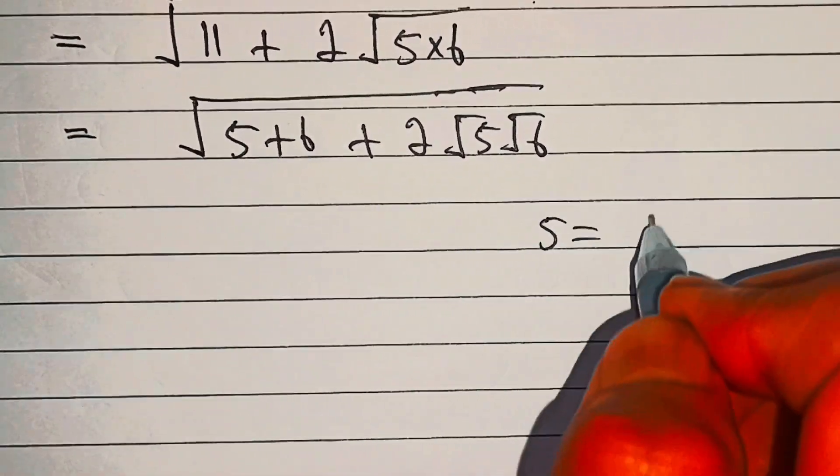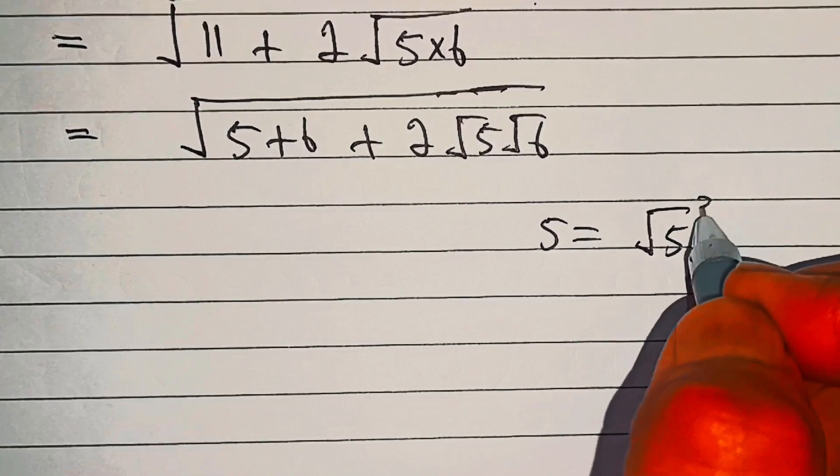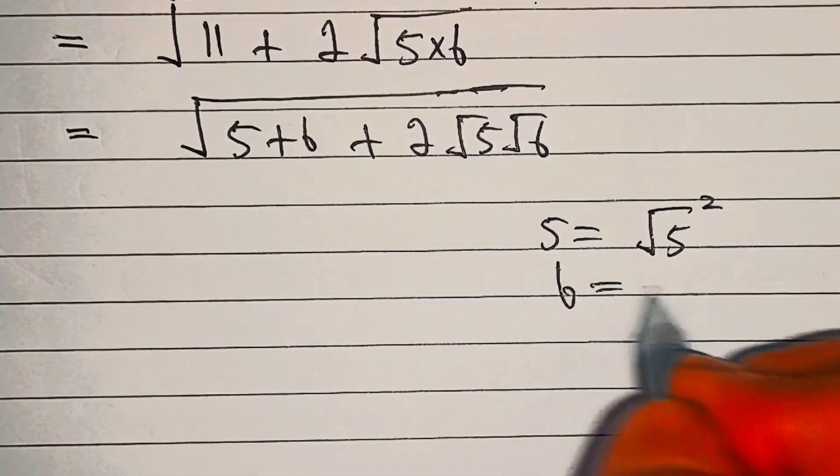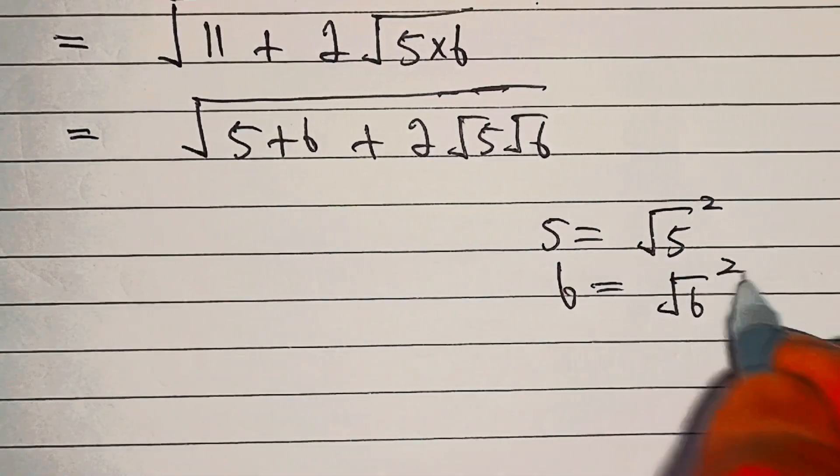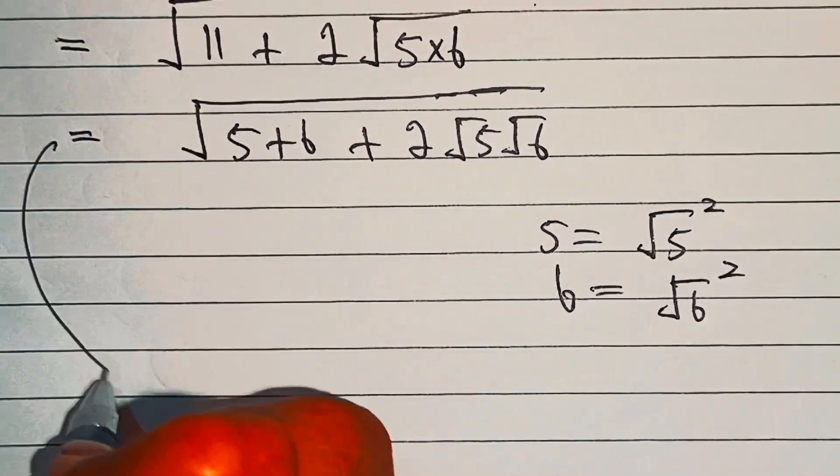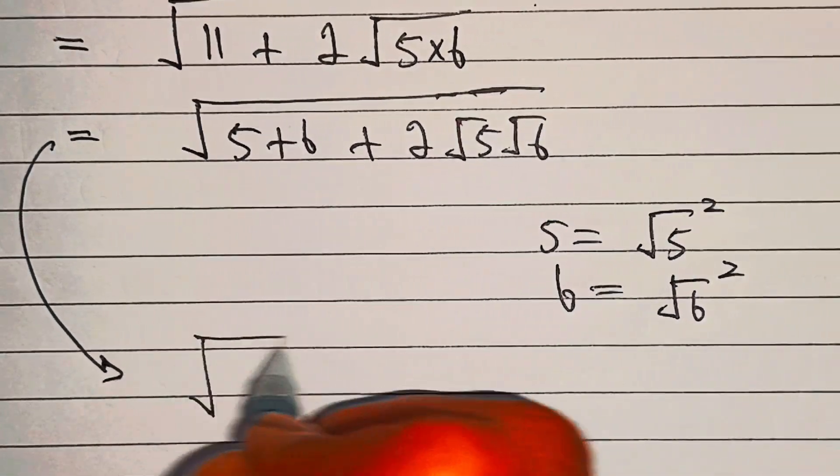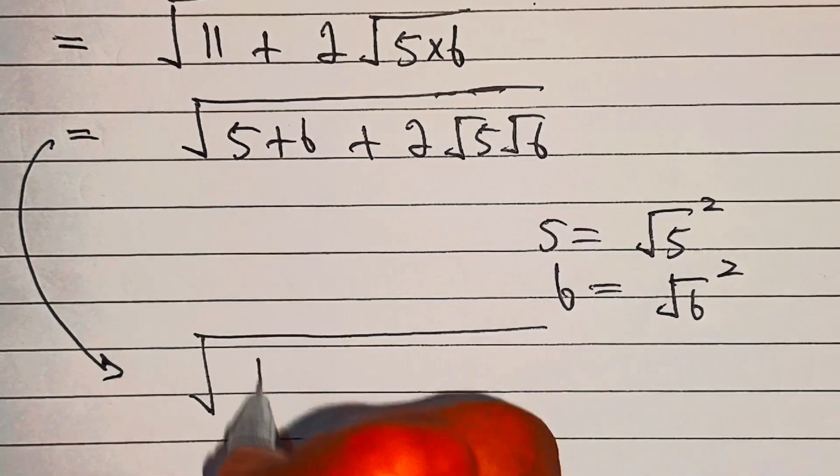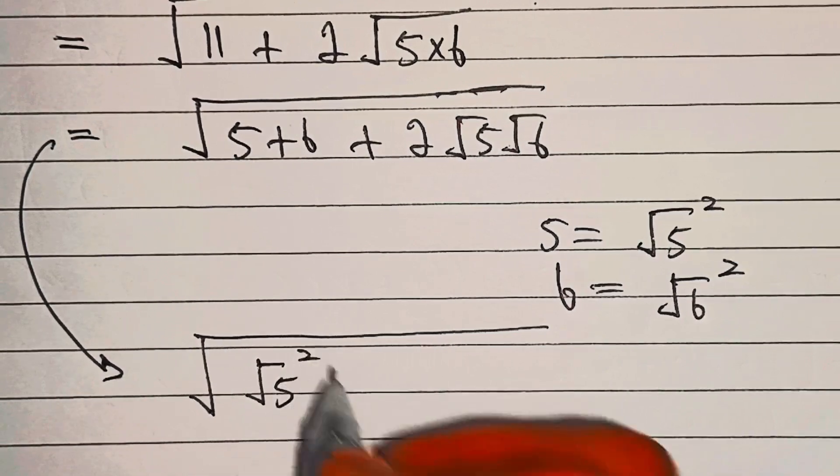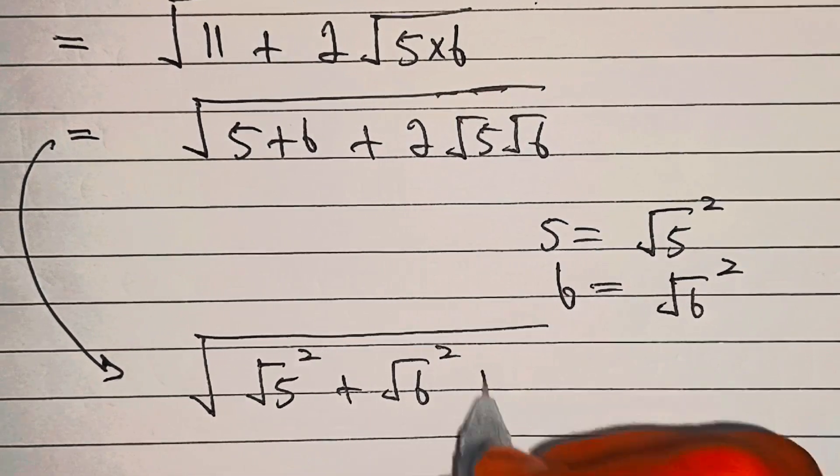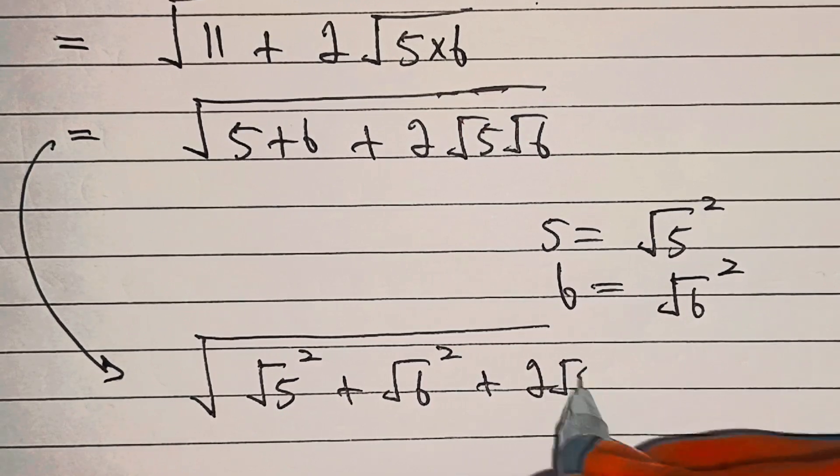So we'll write this as whole square root of square root 5 squared plus square root 6 squared plus 2 under root 5 into under root 6. Now if you clearly see, this is an algebraic identity...